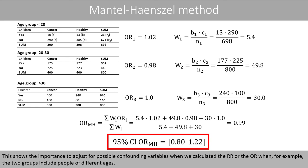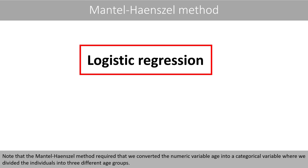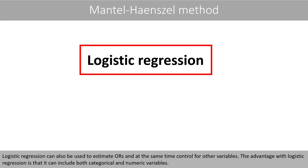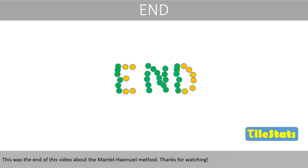This shows the importance of adjusting for possible confounding variables when we calculate the relative risk or the odds ratio — for example, when the two groups include people of different ages. Note that the Mantel-Haenszel method required converting the numerical variable age into a categorical variable by dividing individuals into three age groups. Logistic regression can also be used to estimate odds ratios while controlling for other variables, with the advantage that it can include both categorical and numerical variables. This was the end of this video about the Mantel-Haenszel method. Thanks for watching!